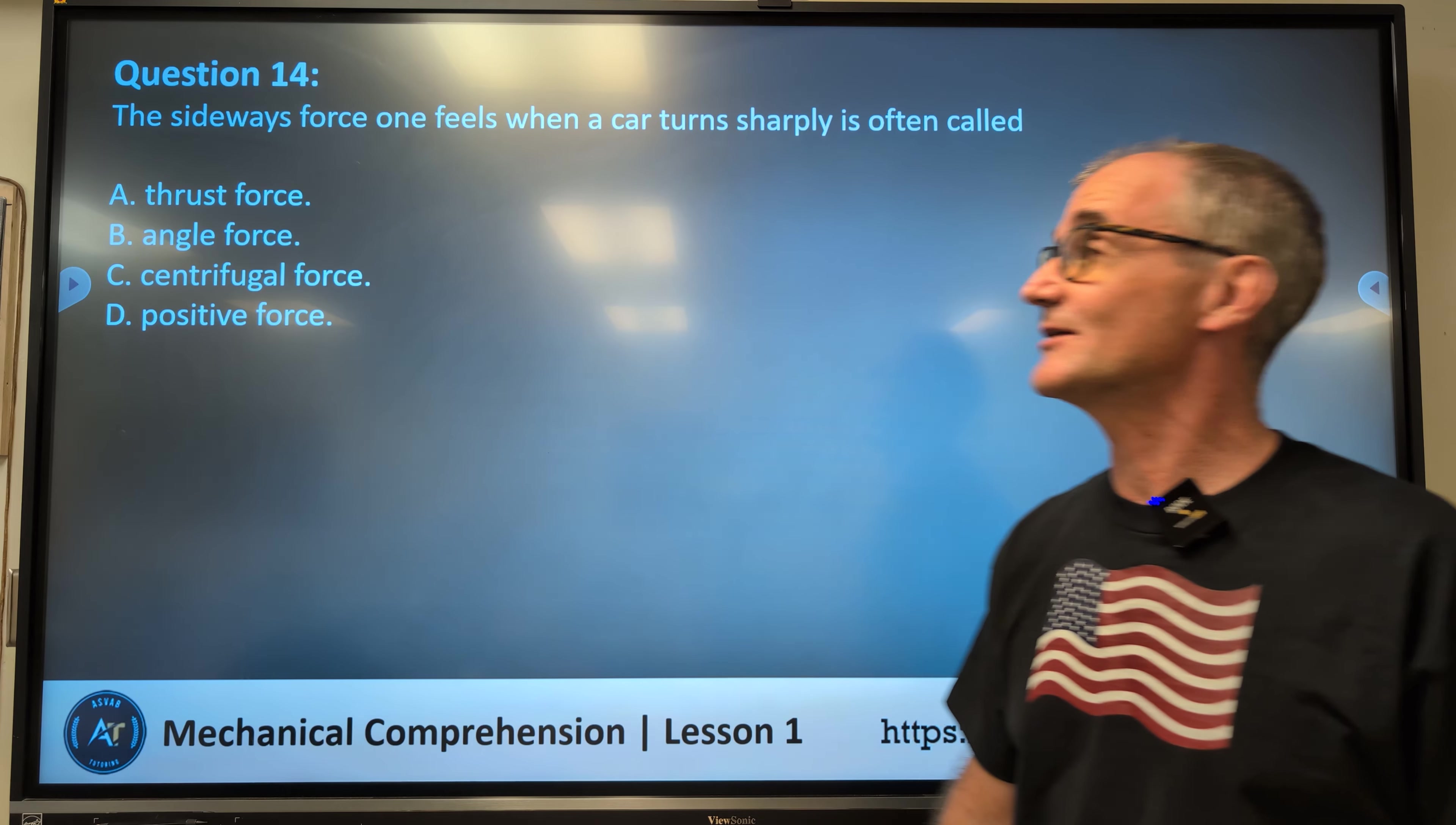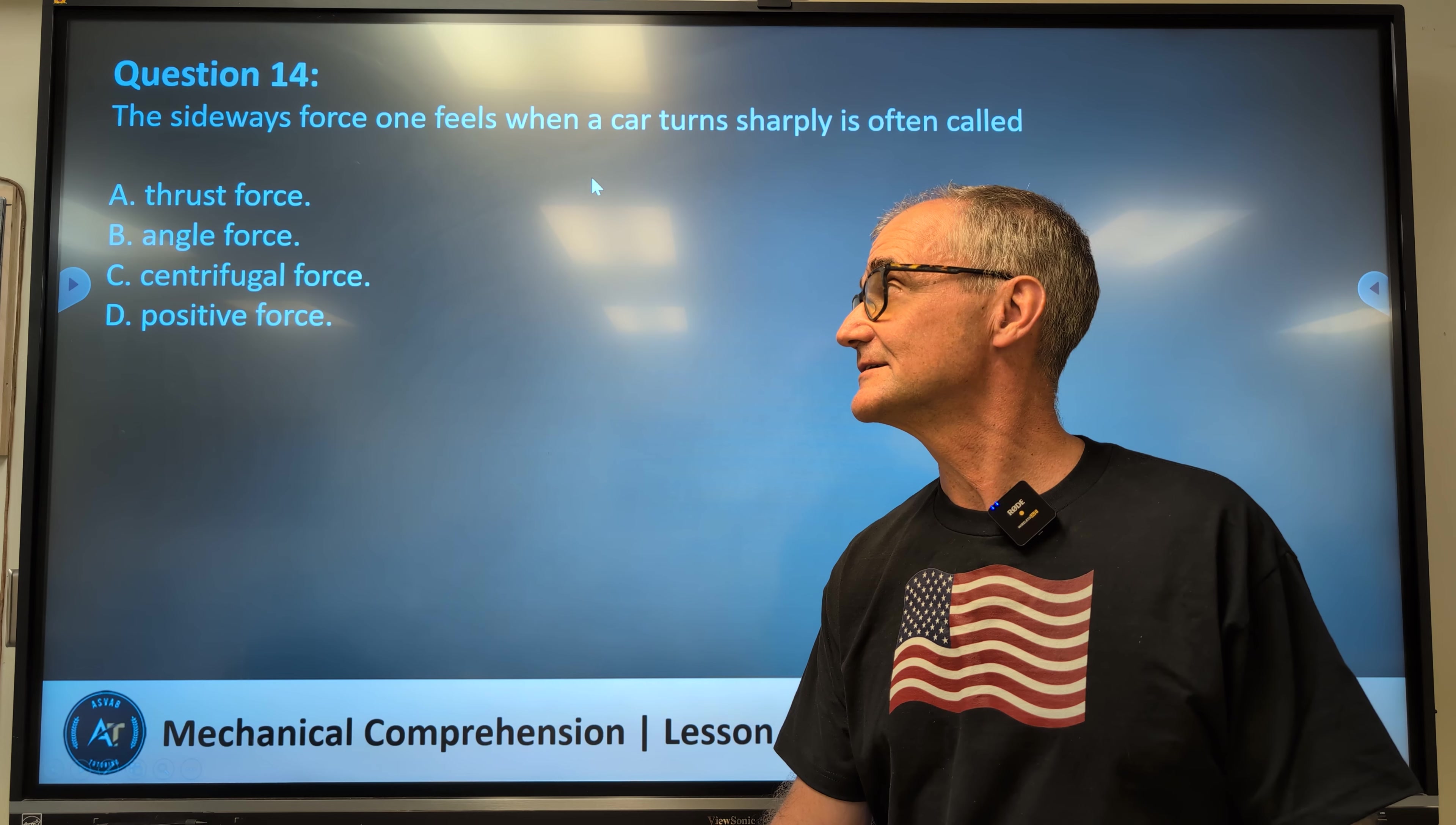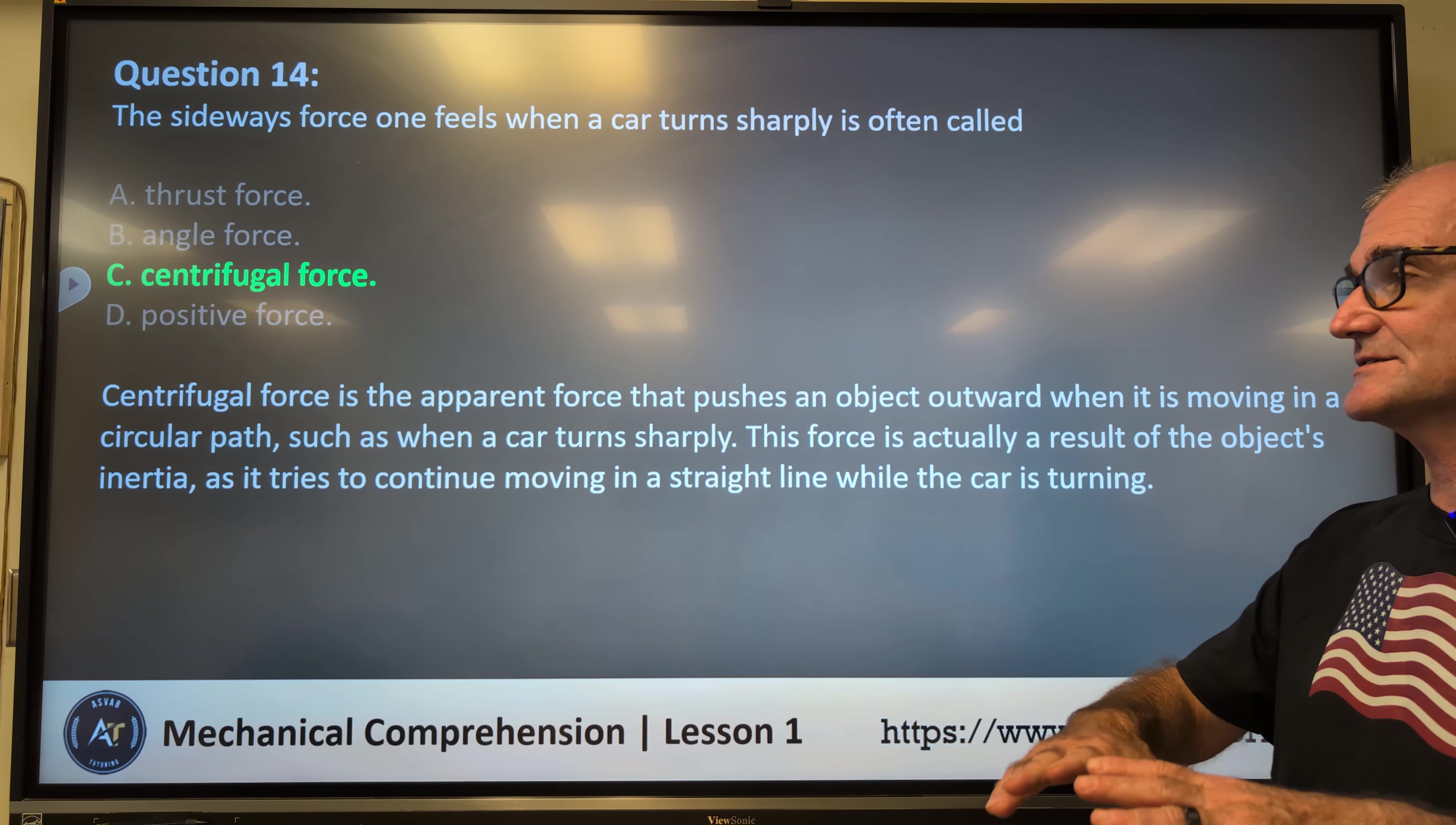All right, number 14. We're almost there. The sideways force one feels when a car turns sharply is often called: A, thrust force, B, angle force, C, centrifugal force, or D, positive force. Correct answer, answer C, centrifugal force. Centrifugal force is the apparent force that pushes an object outward when it is moving in a circular path, such as when a car turns sharply. This force actually results of the object's inertia. It tries to continue moving in a straight line while a car is turning.